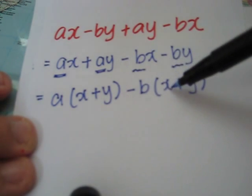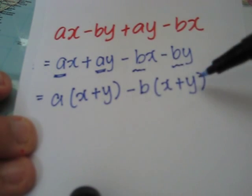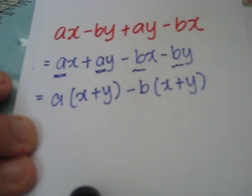Negative b times x will give us negative bx. Negative b times y will give us negative by. Next step.